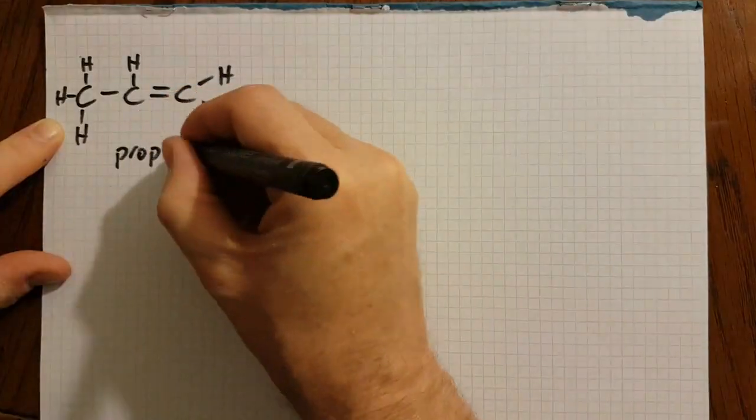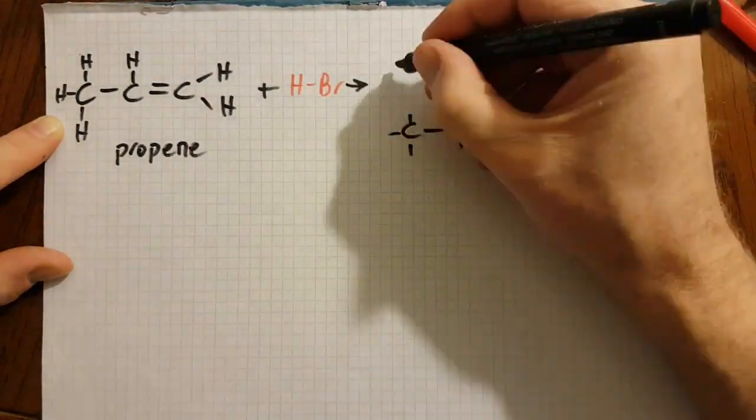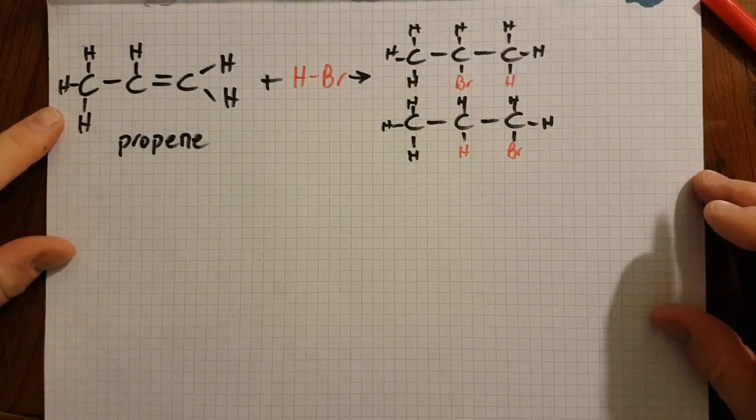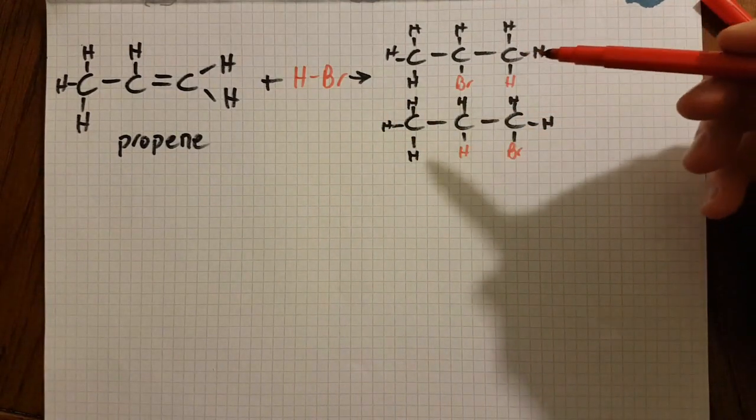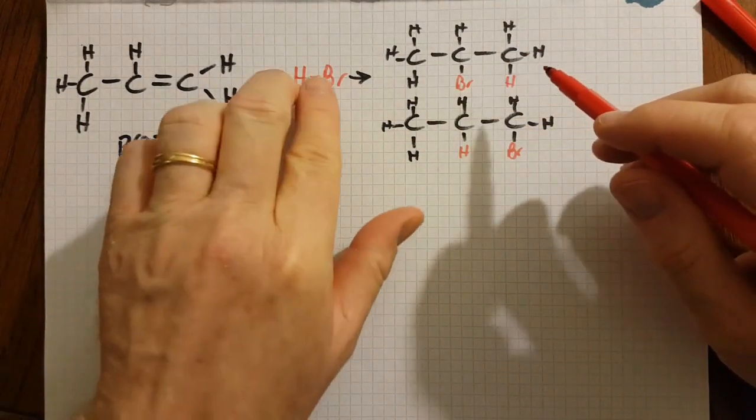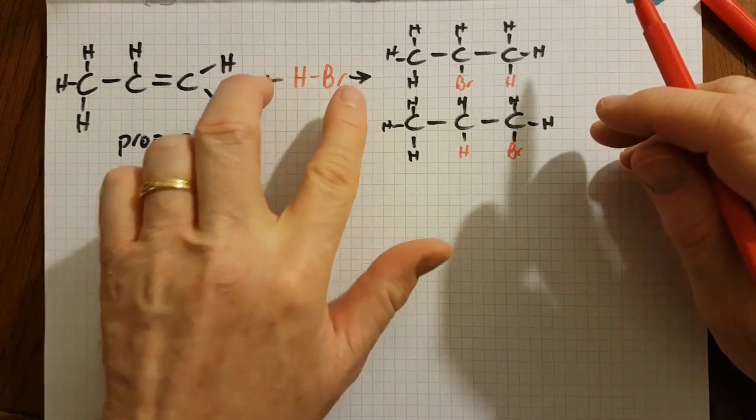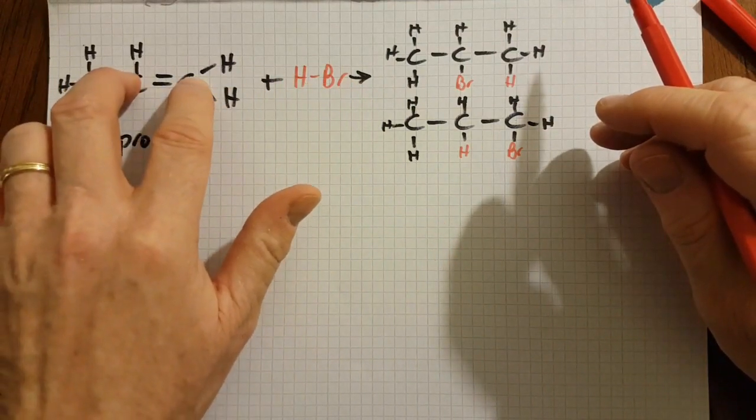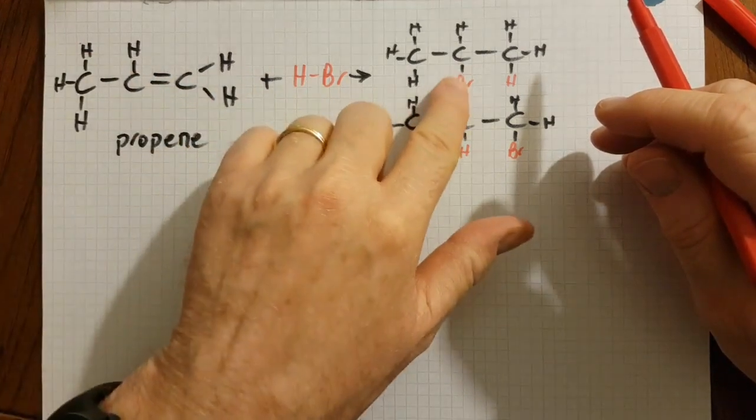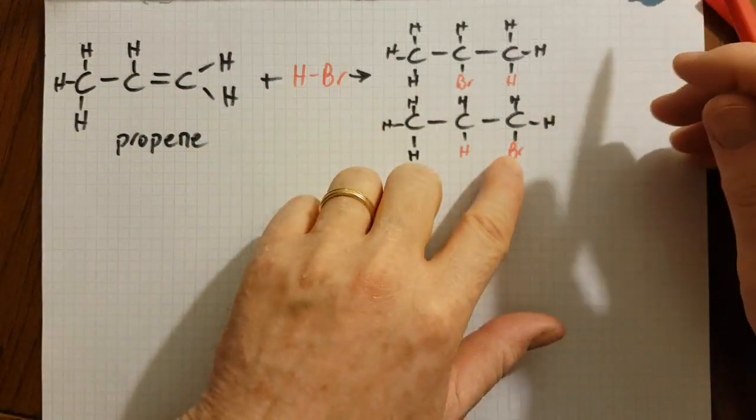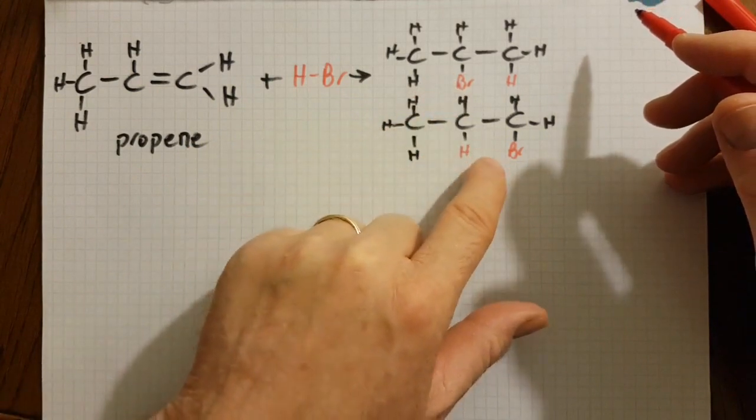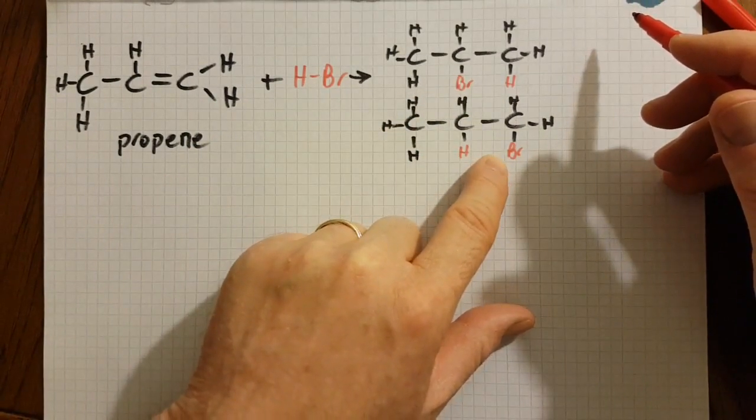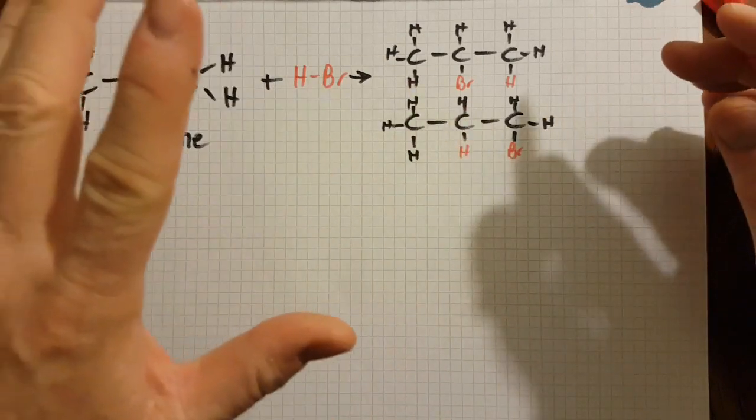There appears to be two possible products as the hydrogen bromide molecule breaks and goes across the carbon-carbon double bond. Maybe the bromine will end up in the middle or maybe it will end up at the end. This being 2-bromopropane and this being 1-bromopropane.